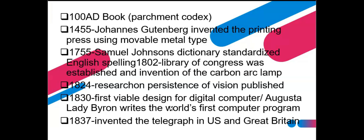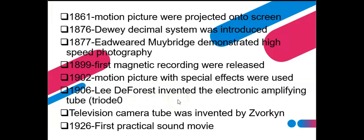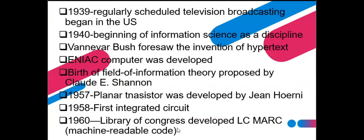Continuing through the timeline: in 1861 the dual decimal system was introduced; Muybridge demonstrated speed photography and the motion picture also appeared around 1861. In 1899, the first magnetic recording was released. In 1902, motion pictures with special effects were used. In 1906, the electronic amplifying tube or triode was invented, along with the television camera. In 1926, the first practical sound movie was produced.